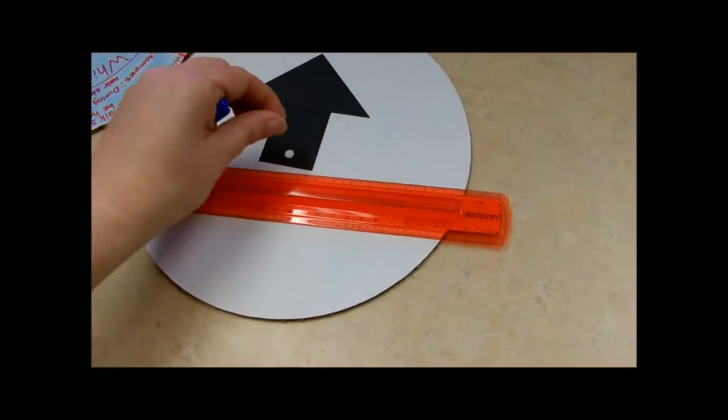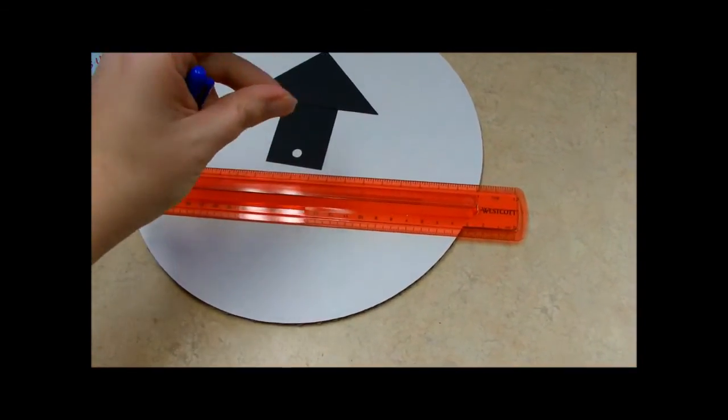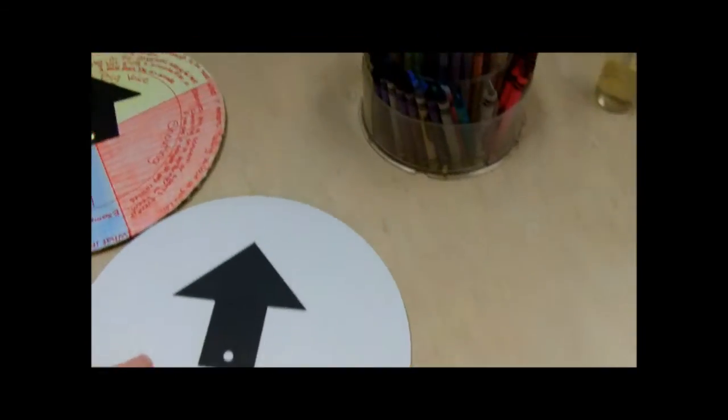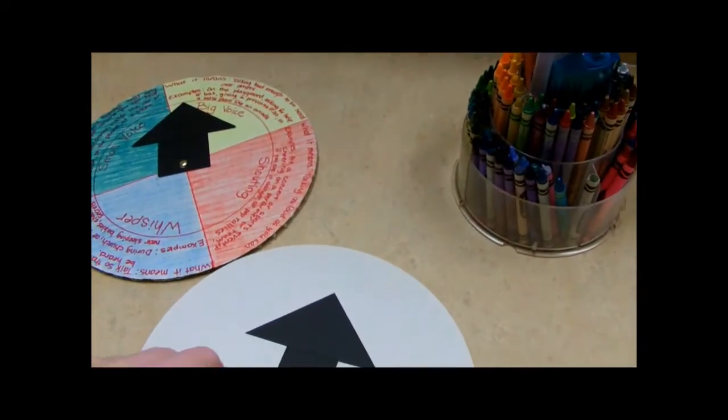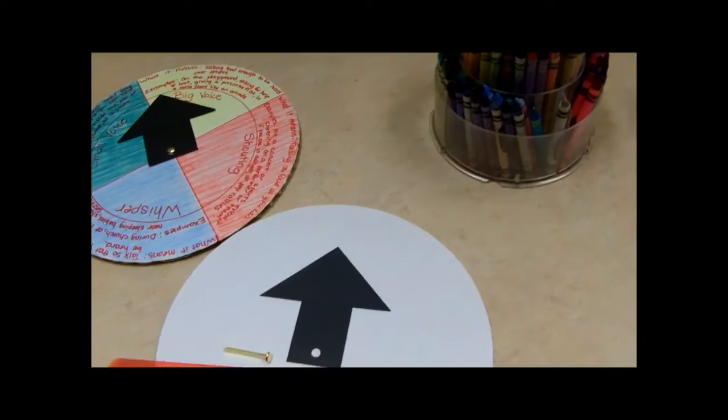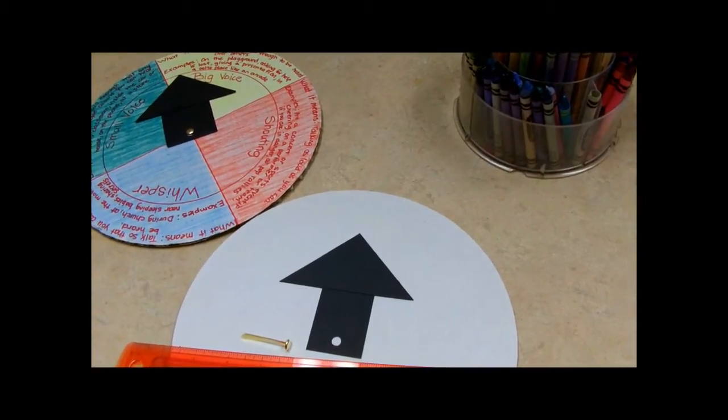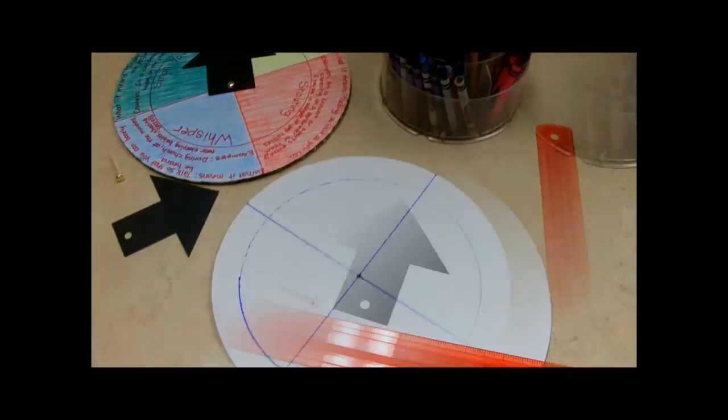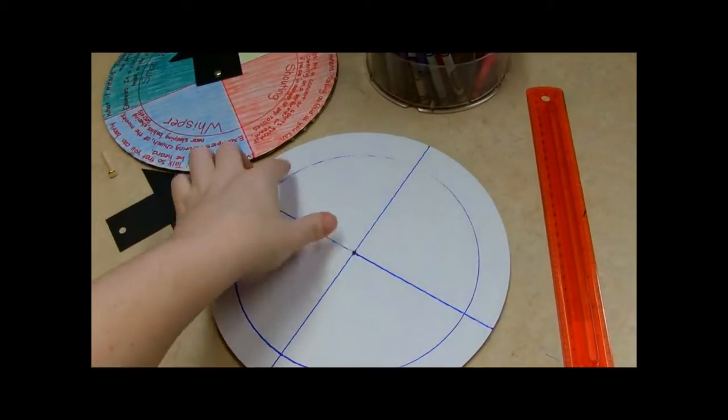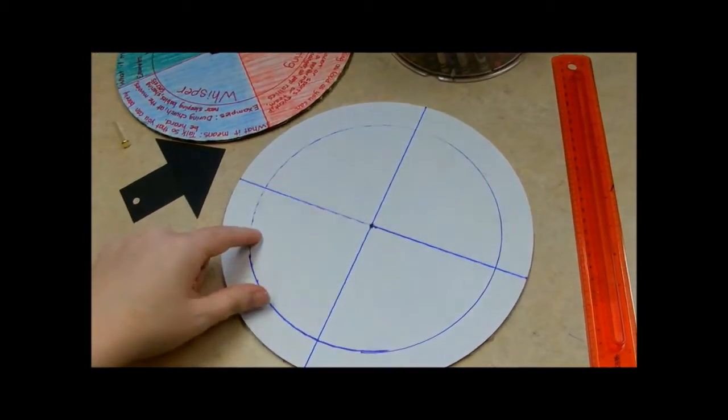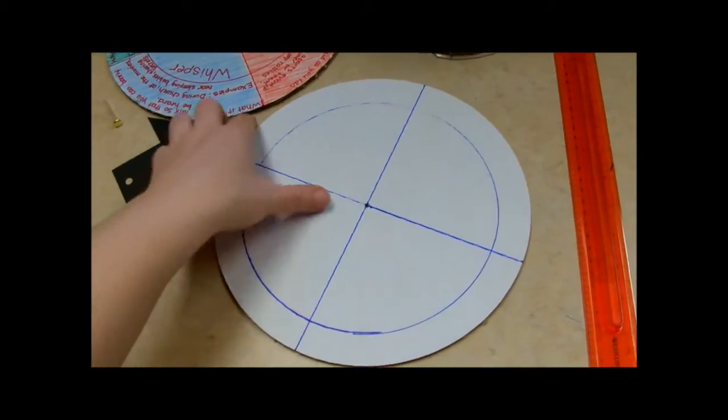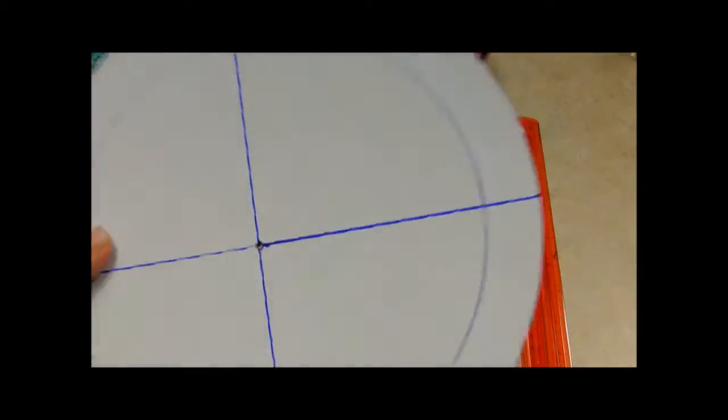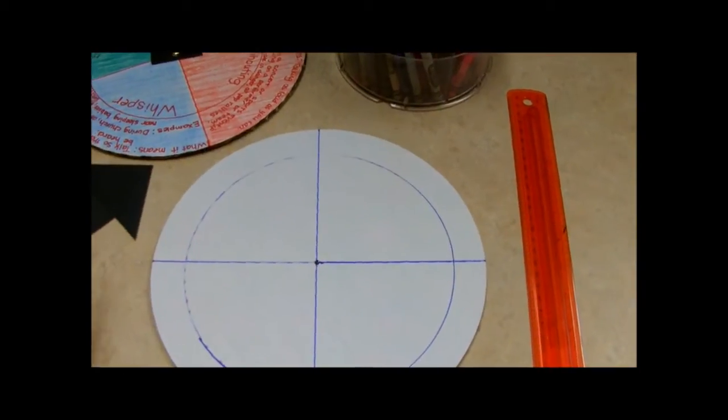I'll attach that with a brad and then I'll use crayons probably to color my wheel and this one will be about voice tone, serious to silly. So after using the template to draw my circle and the ruler to draw my lines, this is what I have. Now I just need to label and color this and attach my arrow.